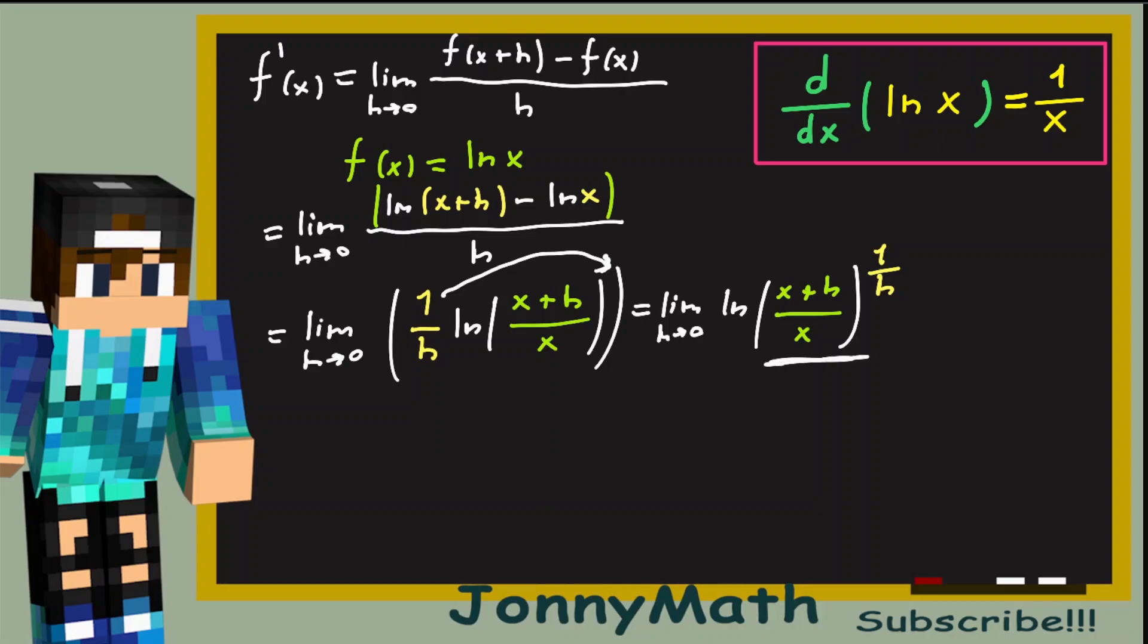And we can also split this fraction in two. So, this is just 1 plus h over x. And since the natural log is a continuous function, this is just the natural log of the limit as h approaches 0 of 1 plus h over x to the 1 over h power.